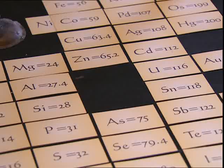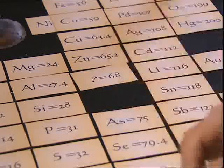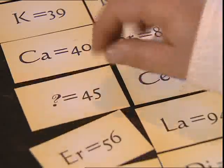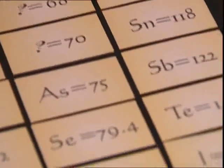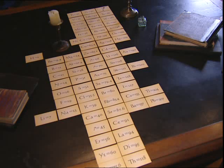Mendeleev was so convinced his pattern was correct that he left spaces — this was his stroke of genius. He reasoned that there were still more elements to be discovered that would fill these gaps. He even predicted the properties of these unknown elements based on their position in his table. If the table really could be used to predict the existence of elements, then other scientists would have to agree that Mendeleev's ideas were right.